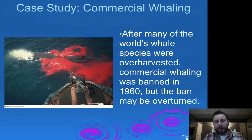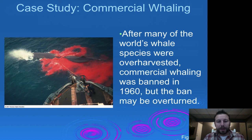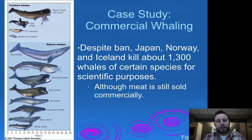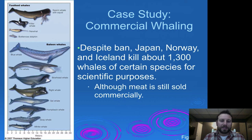Commercial whaling is another scar on human history, though with some successes. Whales were overharvested to the point where commercial whaling was banned in 1960. However, the international ban has workarounds — countries like Japan, Norway, and Iceland kill about 1,300 whales of certain species for so-called scientific purposes, and that meat is still sold commercially. Small cetaceans and dolphins are also overlooked in many international treaties. So that's a little overview of our aquatic biodiversity and the problems we have with it. Next, we'll take a look at what we can do to protect it and help it.